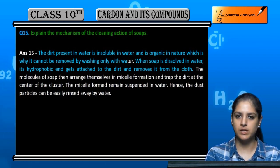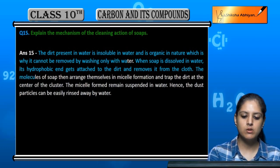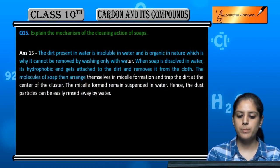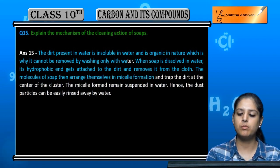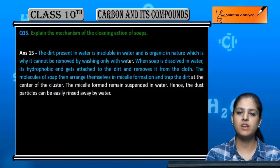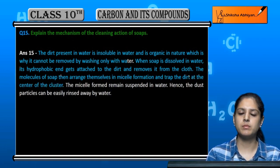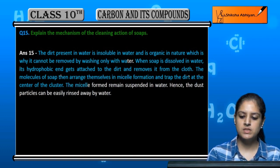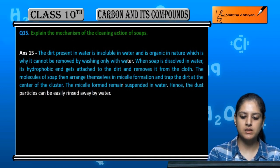The dirt is removed from the cloth and arranged in a circular form. The dirt is trapped in this circular form and becomes a cluster — called a micelle — which is suspended in water. The dust particles are then easily removed.